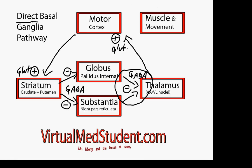Now the thalamus is free to send stimulatory signals — via glutamate — back to the motor cortex. From there the motor cortex gets excited and sends signals to various muscle groups via the spinal cord, ultimately resulting in a desired movement. This is a simplified view of a complex set of neuronal pathways.